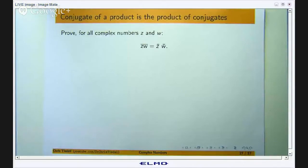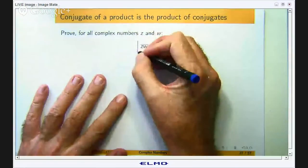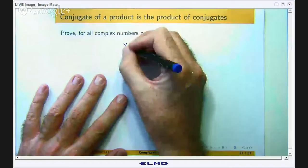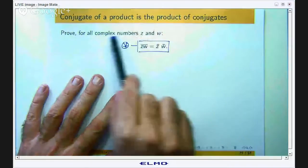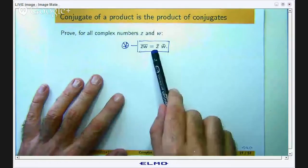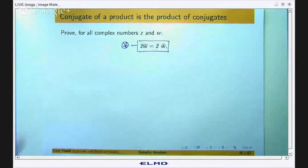So this is the identity that we are going to solve. In words, z and w are complex numbers and you multiply them together and you take the conjugate. That is the same as taking the conjugate separately and then multiplying together.